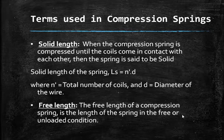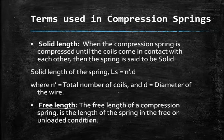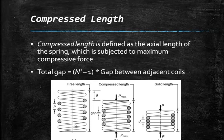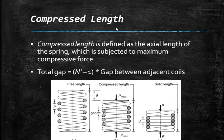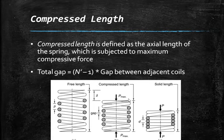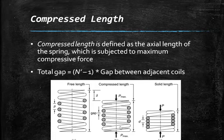Free length is the length of a compression spring in the free or unloaded condition — the overall length when no load is applied. Pitch (p) is also identified here. Compression length is defined as the axial length of the spring when subjected to the maximum compressive force (P_max), which is the maximum load-carrying capacity of the spring.